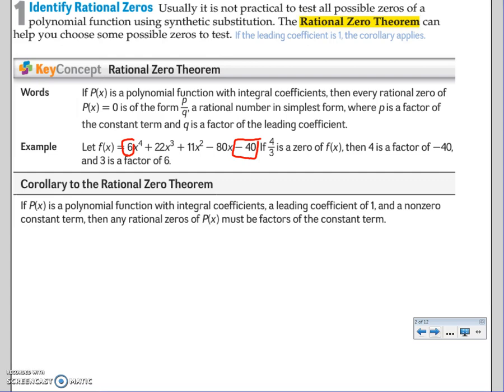This will help you find fractions. So let's look at an example, and there's a corollary to it. Basically, if the highest degree term is 1, then it has to be a factor of that last term.